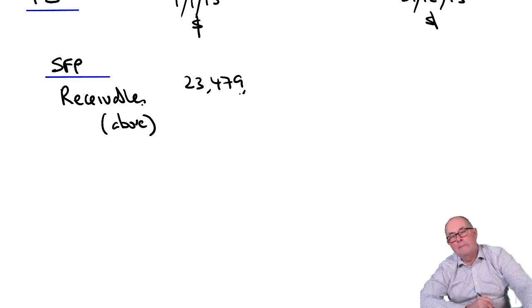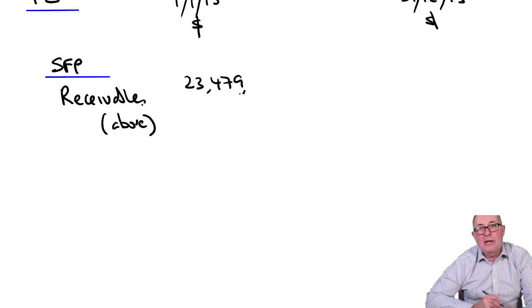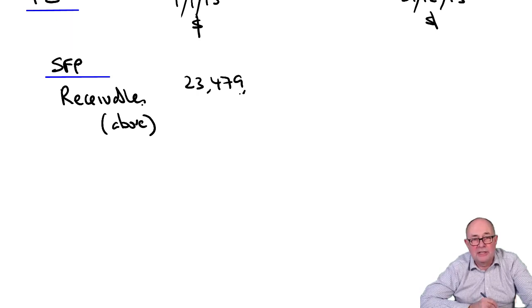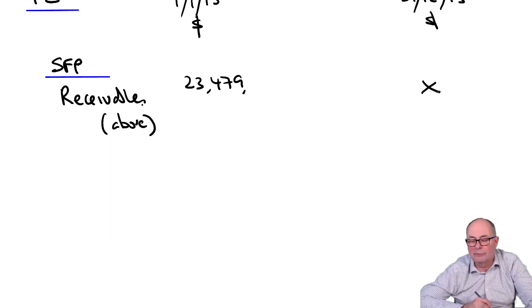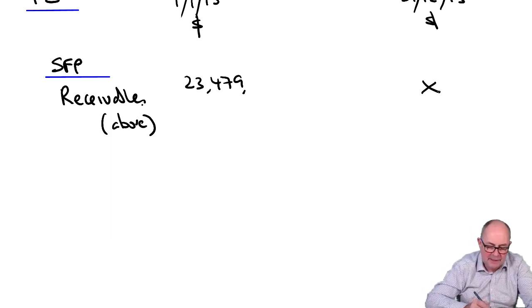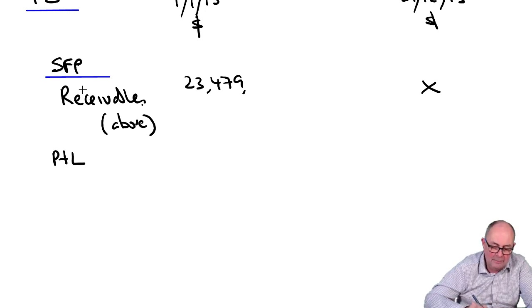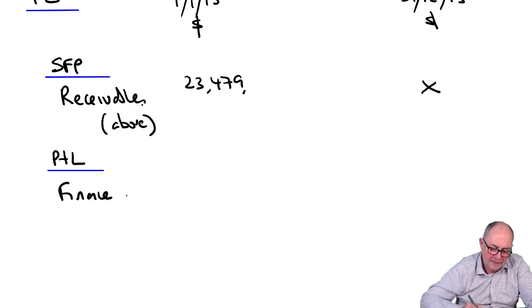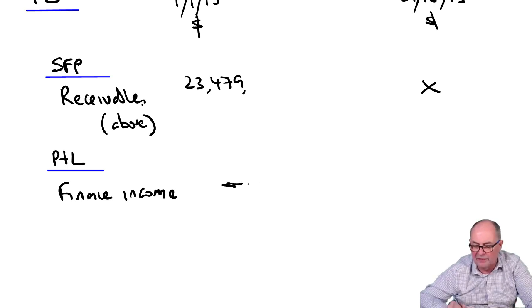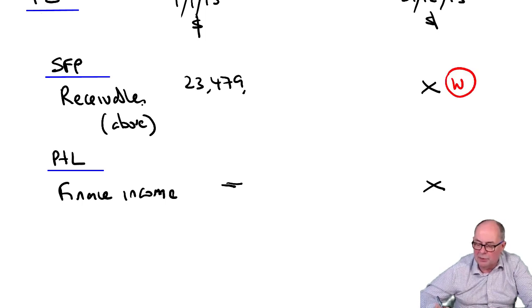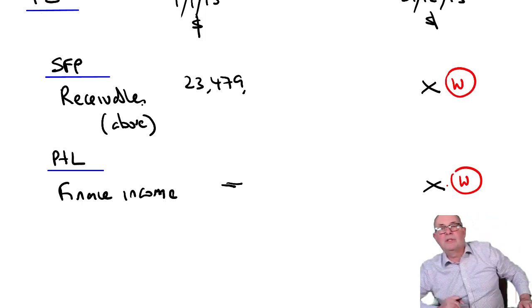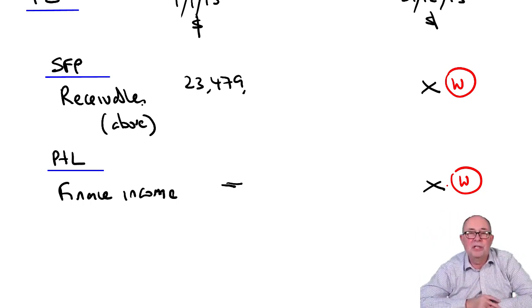Now, when we get to the end of the year, that will be remeasured using amortized cost, or effectively, using amortized cost accounting, using the discount rate of 4%. And also, of course, in the P&L, we will have our finance income. There won't be on the first day of the contract, but there will be by the end of the year. So, we need to work out these two numbers that I've marked with an X. And we'll use an amortized cost style of working.